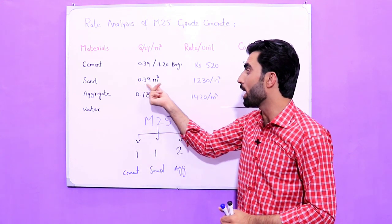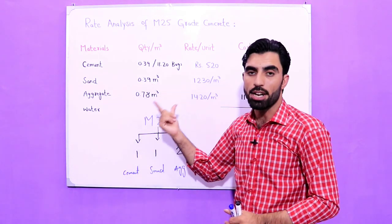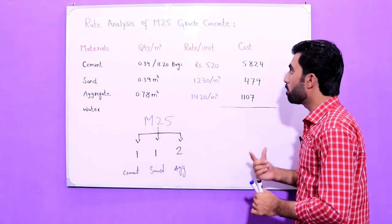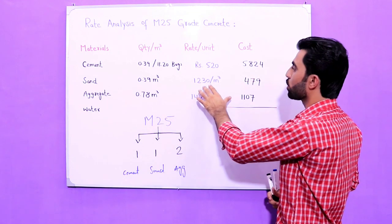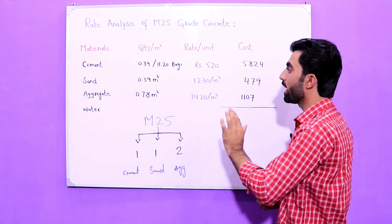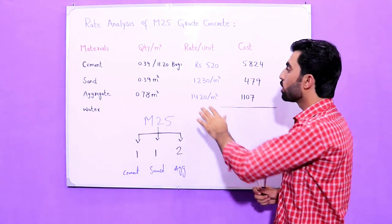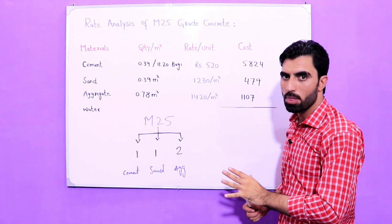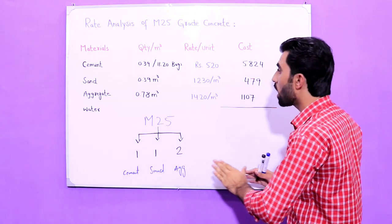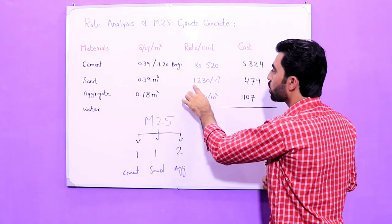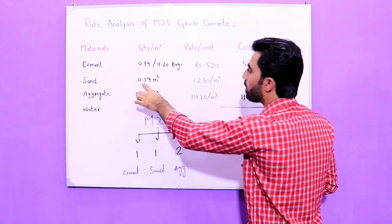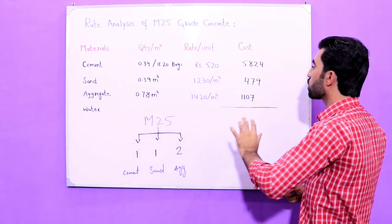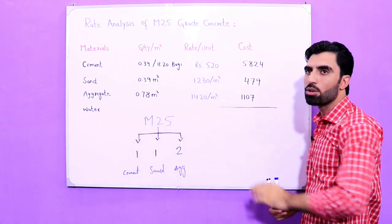For sand, the same quantity is required — 0.39 cubic meters of sand. The price of sand is 1,230 rupees per cubic meter. So the cost of sand becomes 1,230 rupees multiplied by 0.39 cubic meters, which equals 479 rupees.